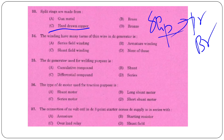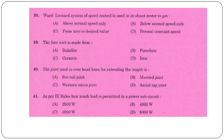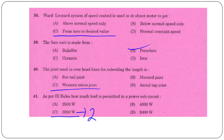Shunt field winding has many turns of thin wire in a DC generator. DC generator used for welding is the differential compound type. The connection of the no-volt coil in a DC 3-point starter is in series with the shunt field across the DC supply. Van Leonarde system of speed control is used in a DC shunt motor to get speed from 0 to the desired value.